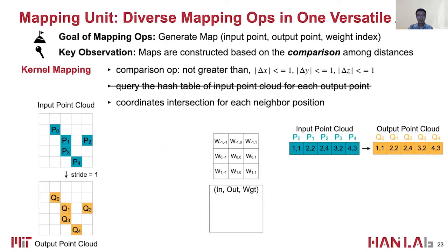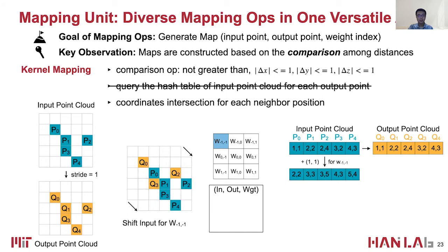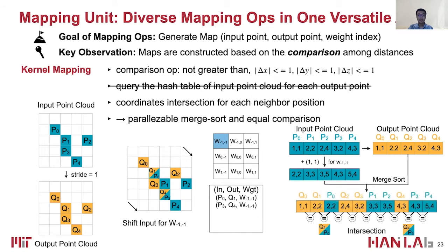Therefore, instead of a hash table-based implementation, we convert the comparison in kernel mapping into coordinates intersection. Here is an example of finding the maps associated with the weight. The input and output point cloud is aligned at first. Since the weight is at the top-left corner, we shift the input point cloud to the right-bottom direction; that is, all input coordinates are added one. Then the intersection between the output and the shifted input point cloud gives the maps we want. To efficiently perform such intersection detection, we choose to merge-sort two point clouds and compare the adjacent elements to detect the duplicate points.